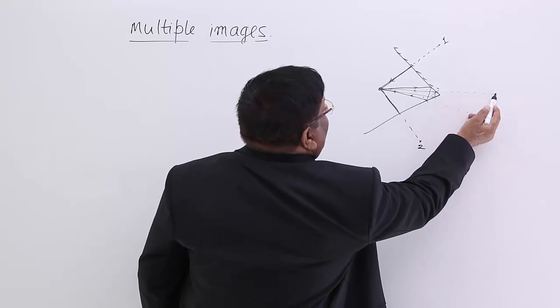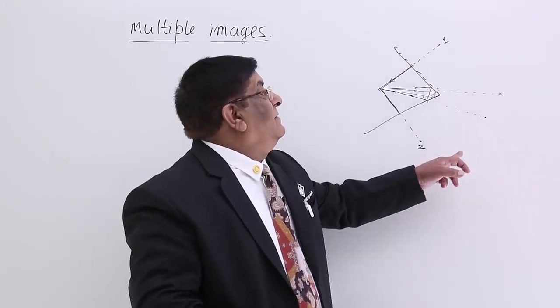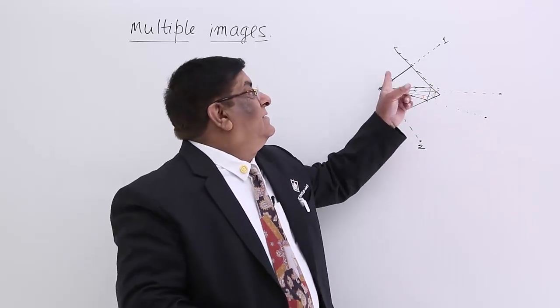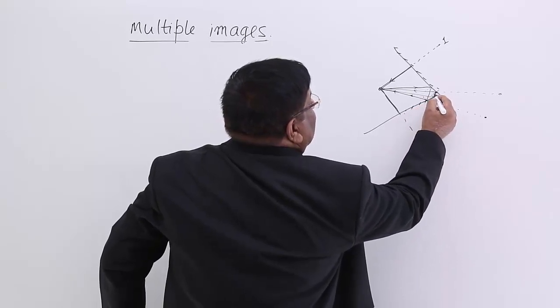We see an image over here. So in this way there are multiple images seen by keeping two mirrors at certain angle theta.